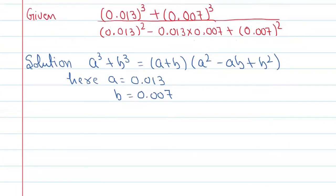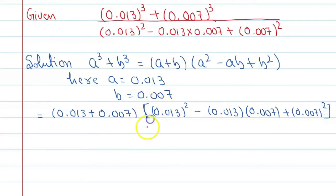Now put this value in the numerator. If you solve according to the numerator, this is a and this is b, so a cube plus b cube. Using this identity, in the numerator you can write 0.013 plus 0.007 into 0.013 raised to power 2 minus 0.013 into 0.007 plus 0.007 raised to power 2.